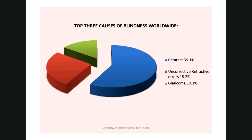Looking at the main causes of blindness and visual impairment: cataracts cause about 40 percent of blindness worldwide. People with uncorrected refractive errors — those who need glasses to correct near or far vision but do not have them — also experience visual impairment. Glaucoma accounts for about 10 percent of visual impairment on a worldwide basis.